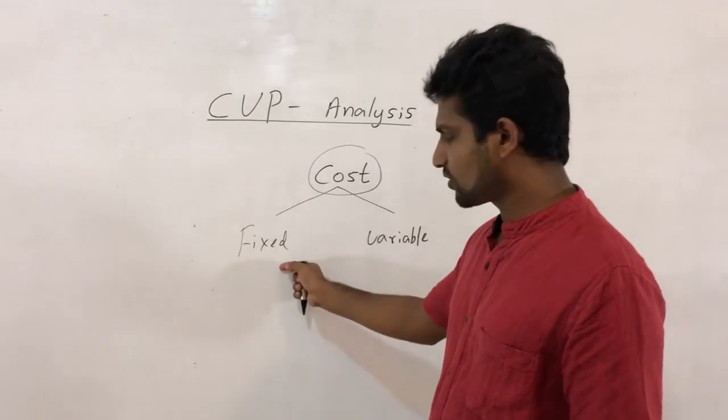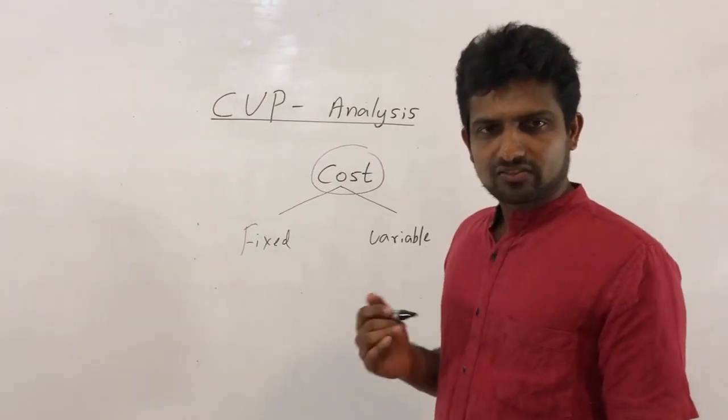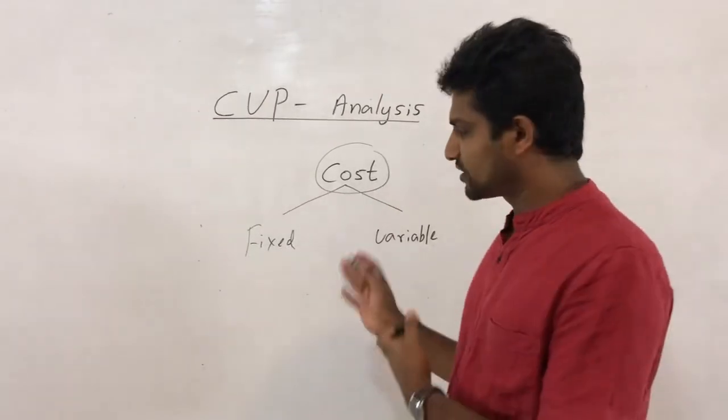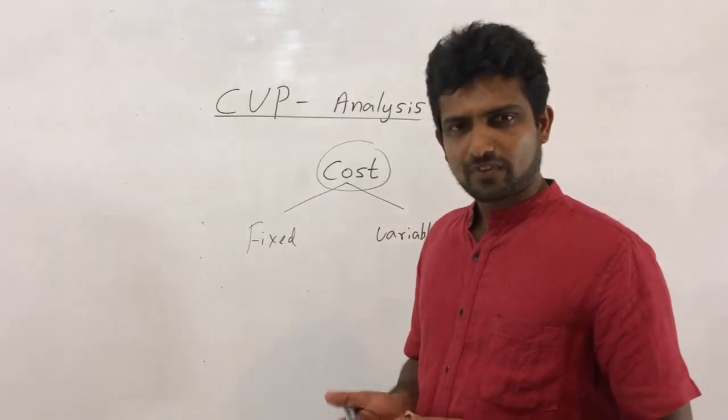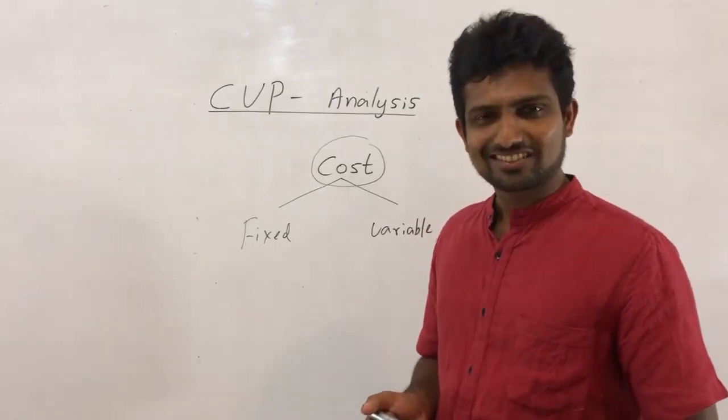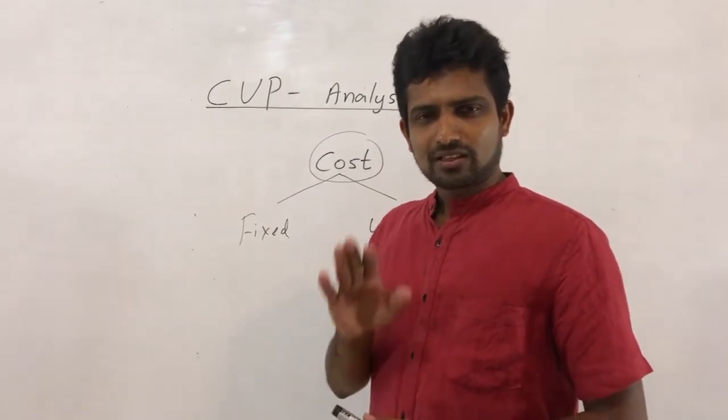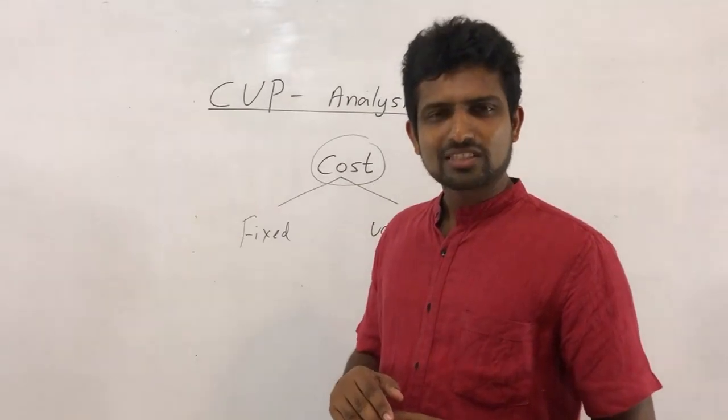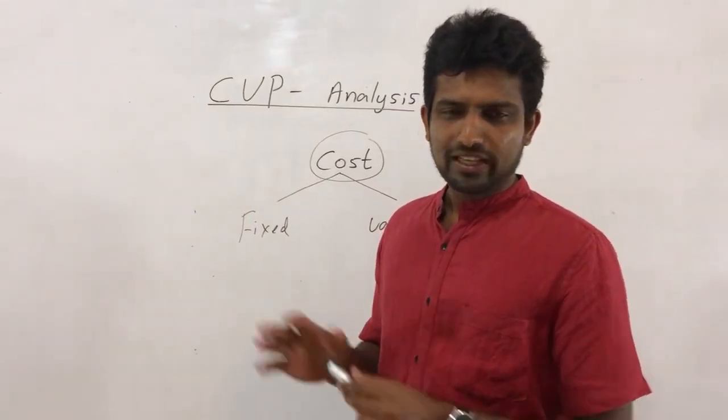I think as advanced level students you all should have the basic understanding, the meaning of fixed cost and variable cost. Fixed cost are fixed, they are always constant. The amount does not depend on the quantity. That means when the level of production is zero.